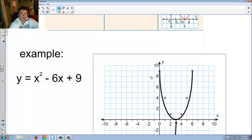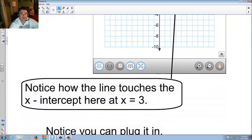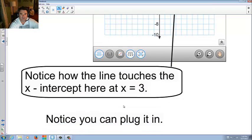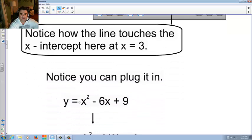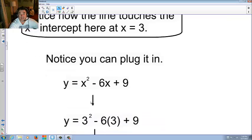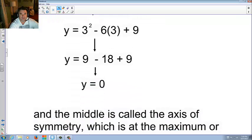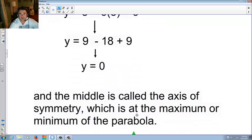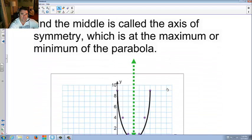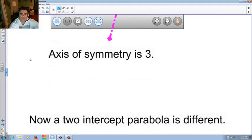And simply put, you have here, it's saying 3 comma 0, so your axis of symmetry is at 3, because it cuts right through. You can easily see it, that's not a problem. Here, x squared minus 6x plus 9, if I graph it, looks like my bottom is at a 3. Notice how the line touches the x-intercept here at x equals 3. Notice how you can plug it in.